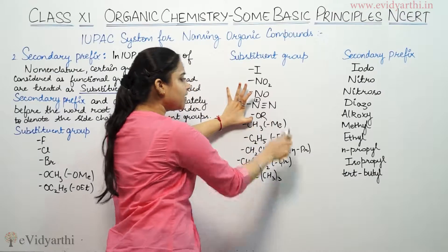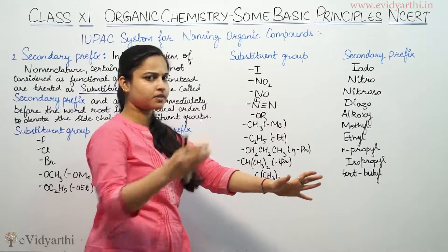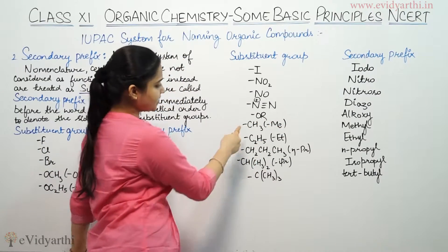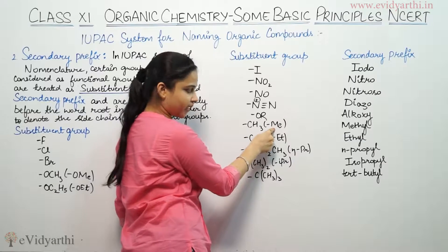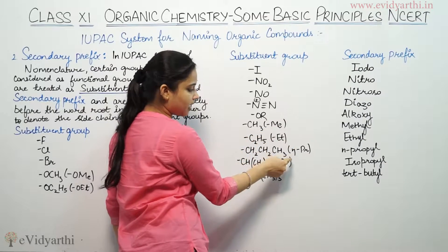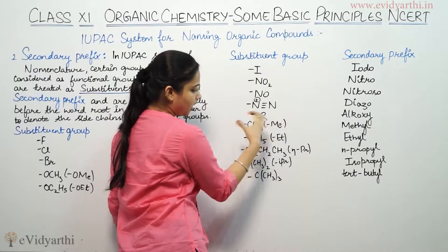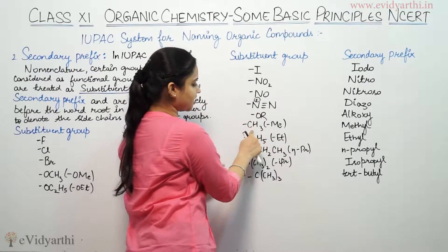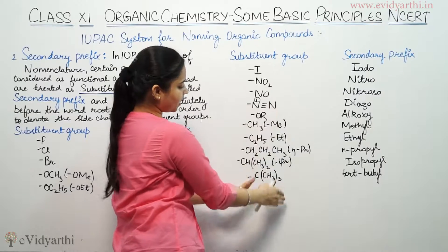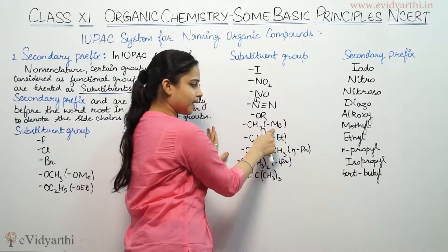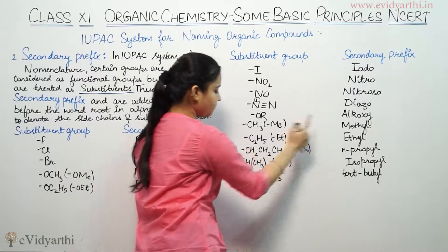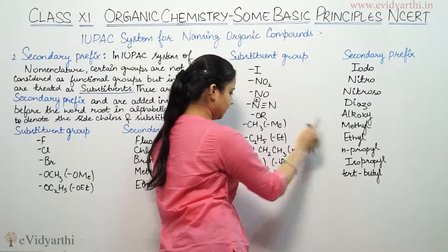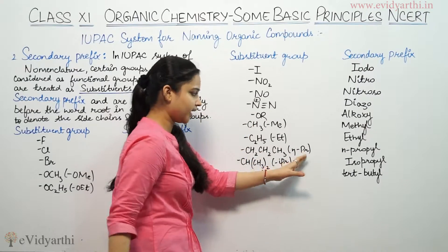If we have a type of alkyl group present, the OR group can be written in short form. Please note these abbreviations: methyl (CH3) is written as Me in short form. C2H5 is ethyl, written as Et. Capital P, small t, denotes propyl. Then CH2-CH2-CH3 is our n-propyl group.